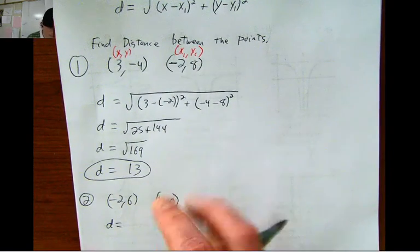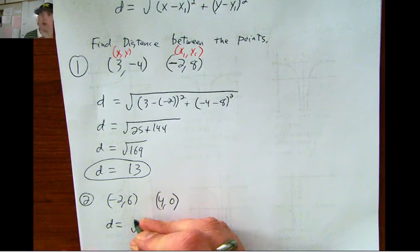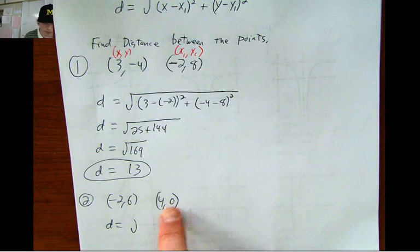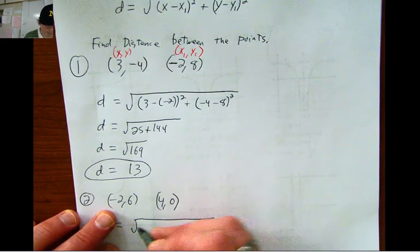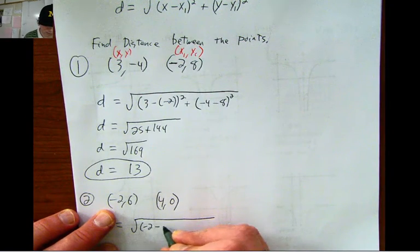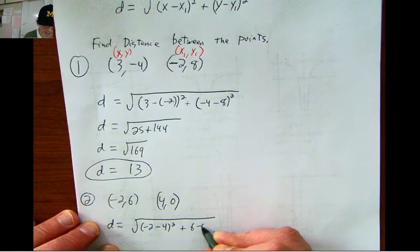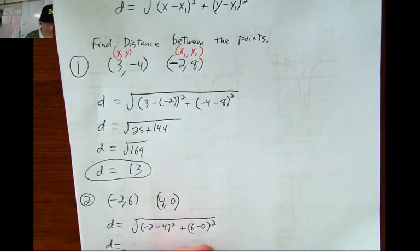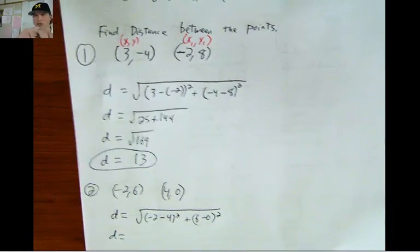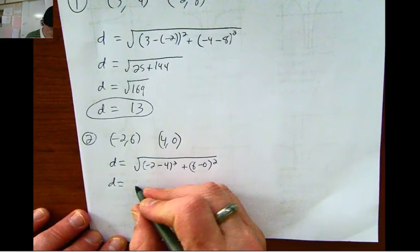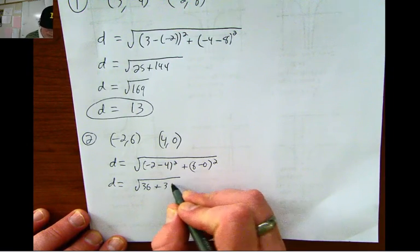D equals, same thing. Label this one x, y. Label this one x₁, y₁. Or you could do it the other way around. It really doesn't matter. Negative 2 minus 4 quantity squared plus 6 minus 0 quantity squared. Negative 2 minus 4 is negative 6, and when you square negative 6, you get 36. 6 minus 0 is 6, if you square it, you get 36.